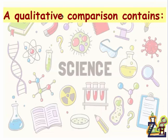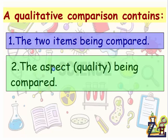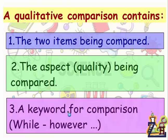The qualitative comparison first contains the two items being compared — we have to mention them — then the aspect or quality being compared, what are we comparing, and finally keywords for comparison such as 'while', 'however', etc. These three elements of the comparison should be present in all of them.